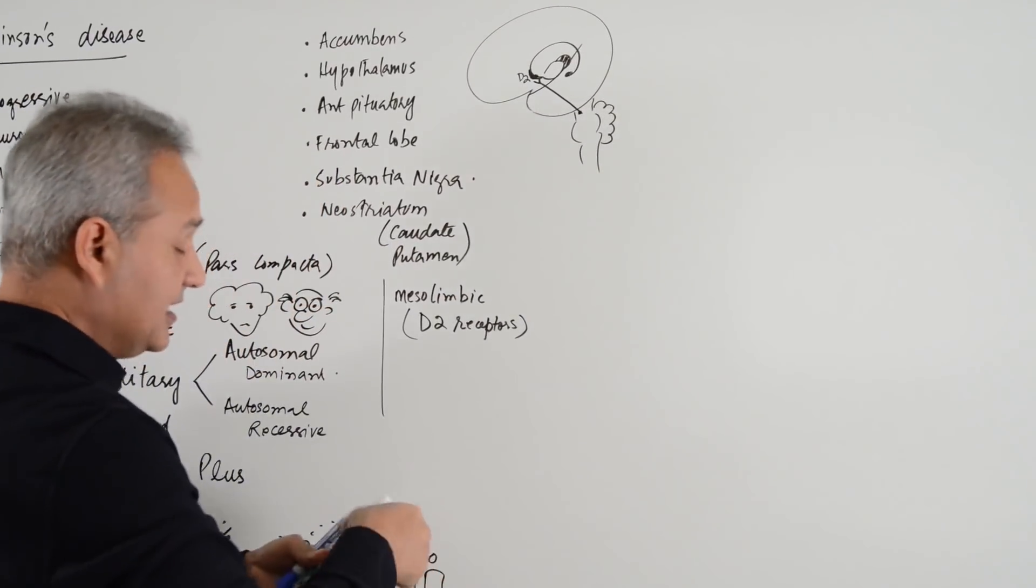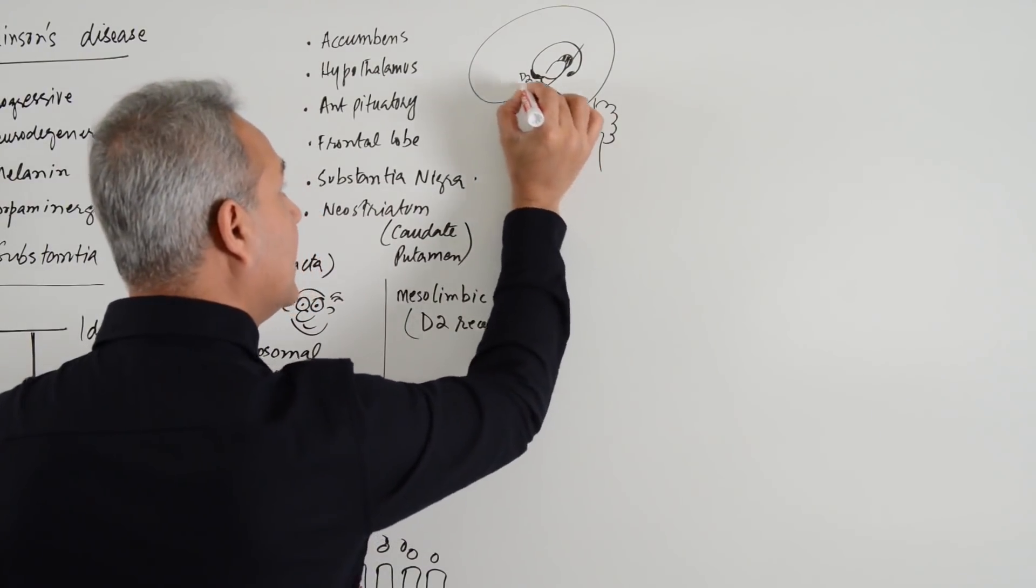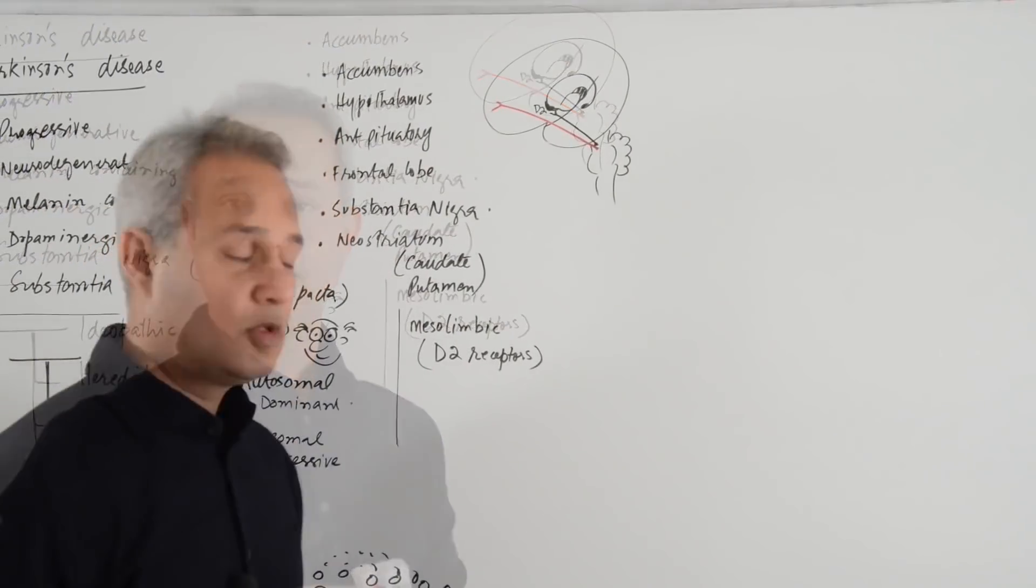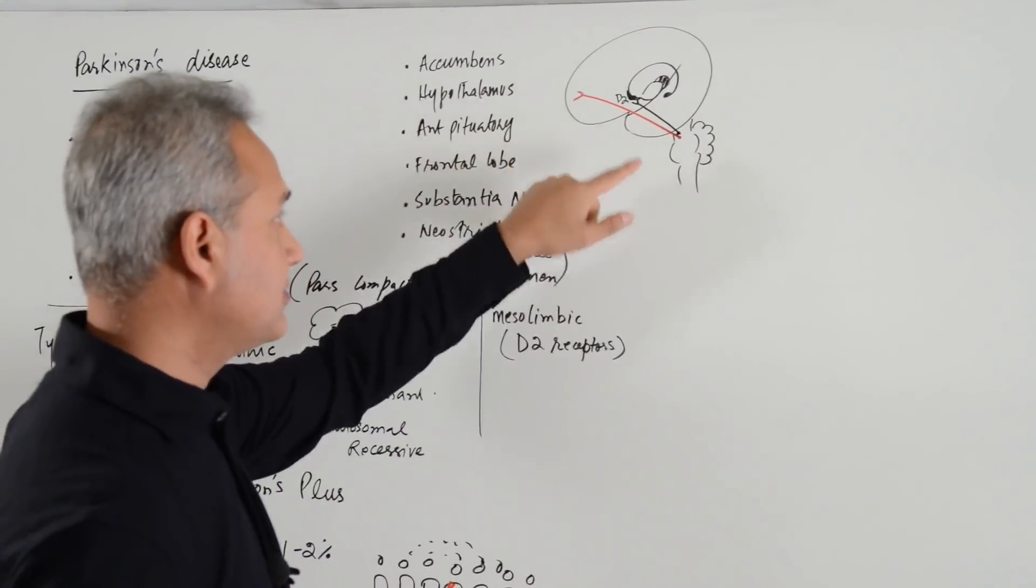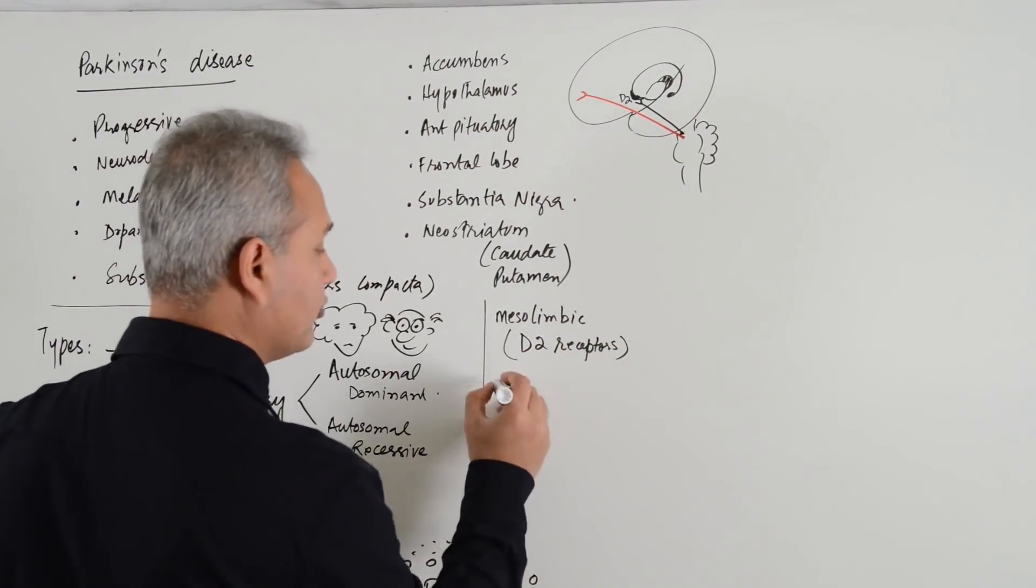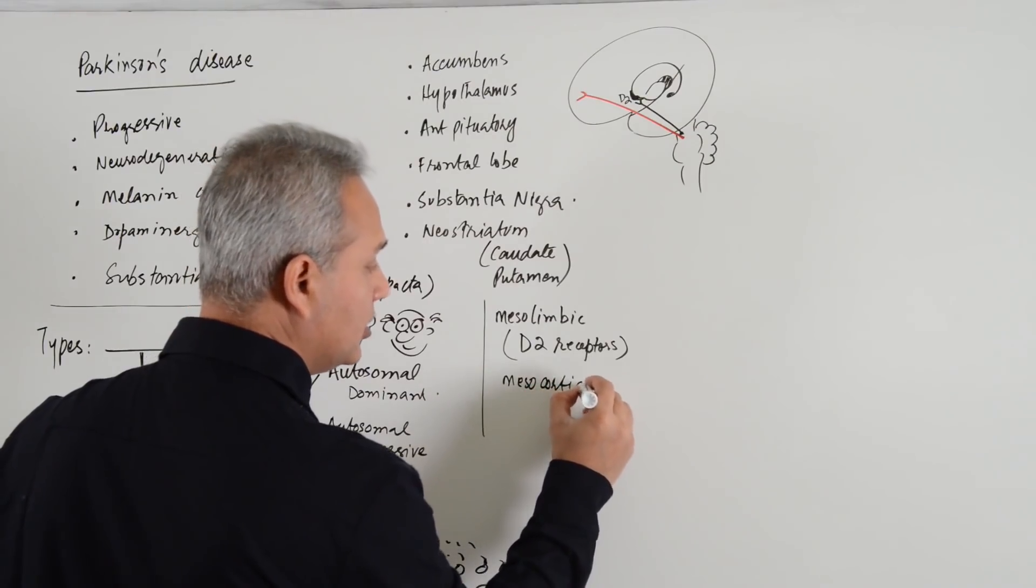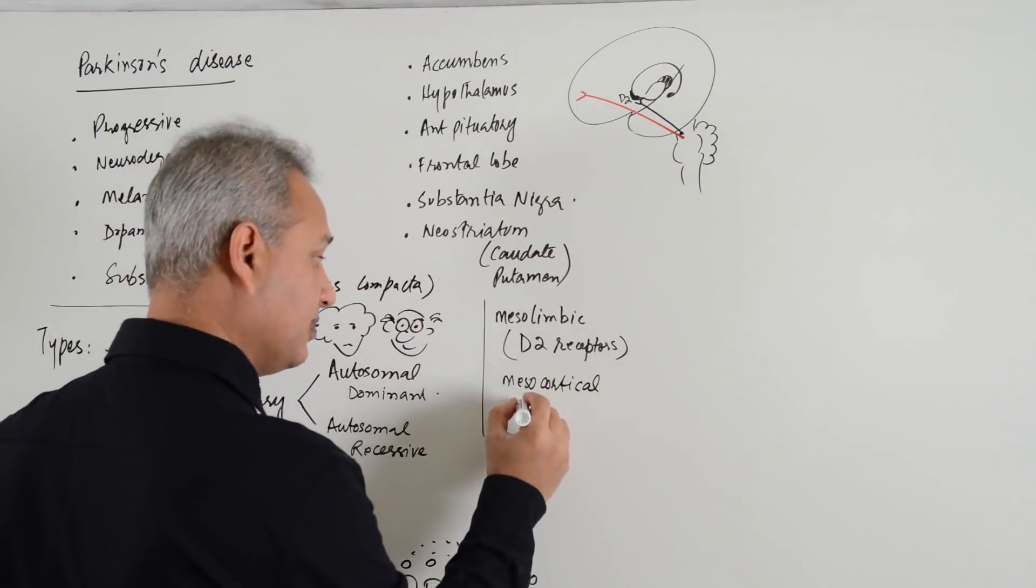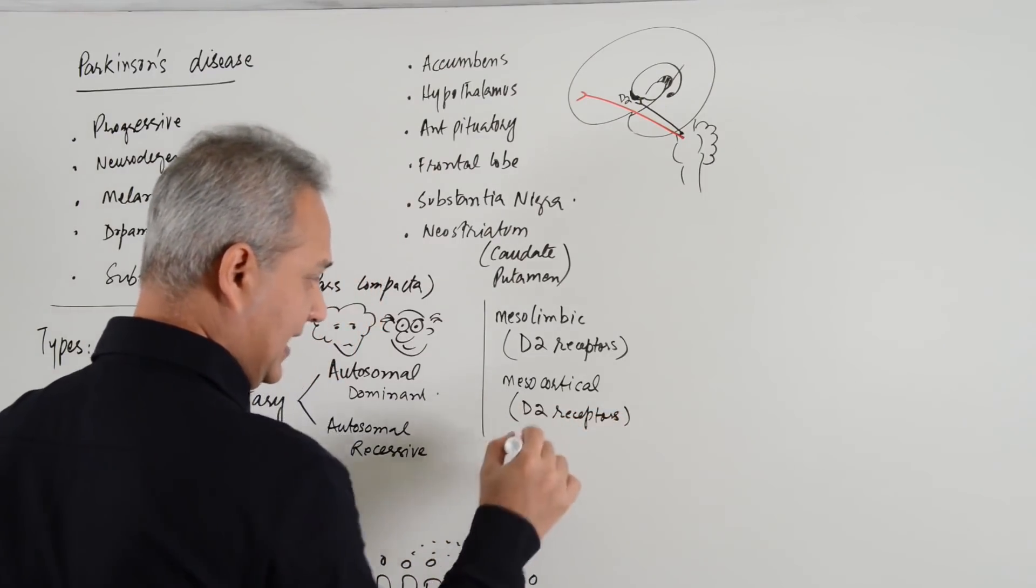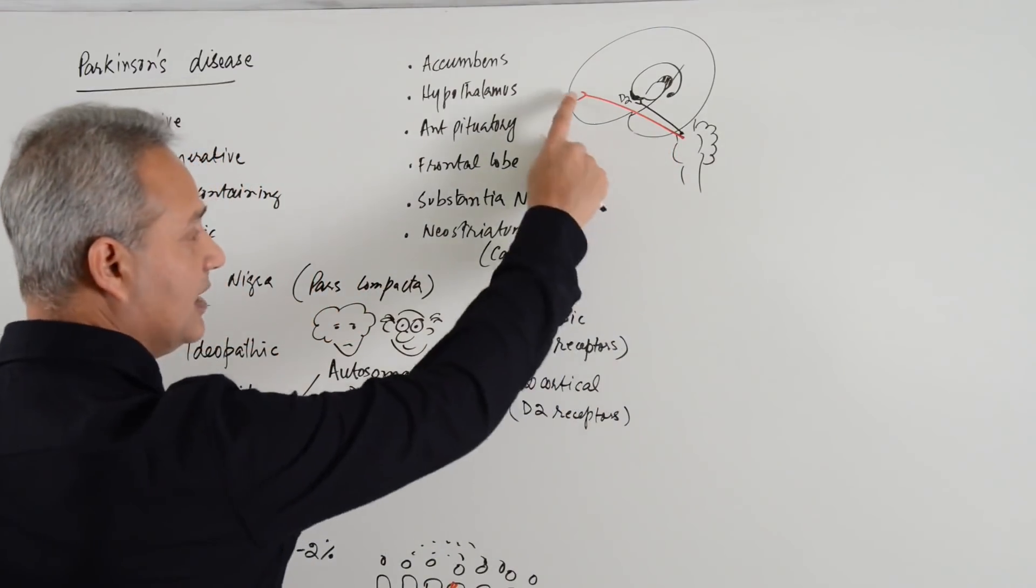Then, there is mesocortical. So, starting from the midbrain to the frontal lobe, there is another dopaminergic pathway. The D2 receptors are present here. Mesocortical pathway. Again, D2 receptors of dopamine release and dopamine receptors are for the negative effects. So, that is this pathway.